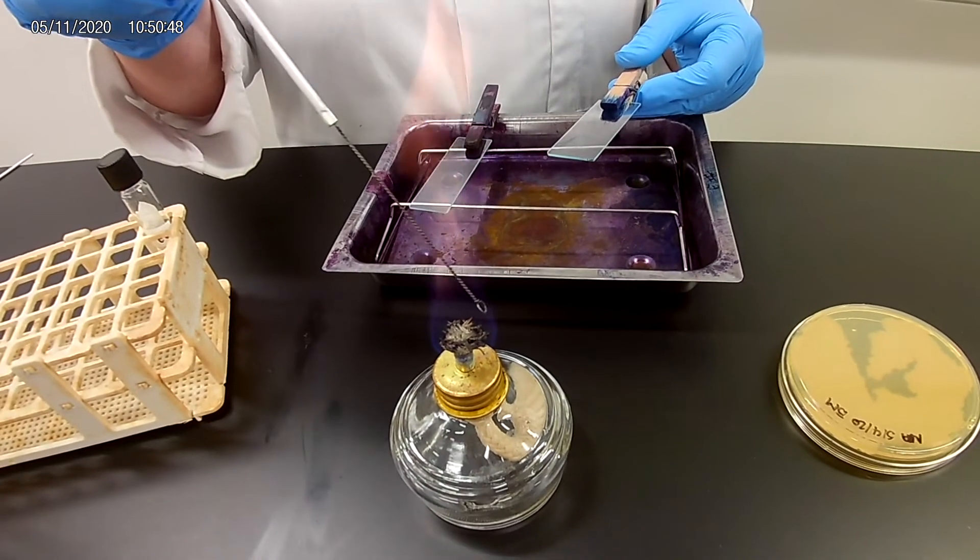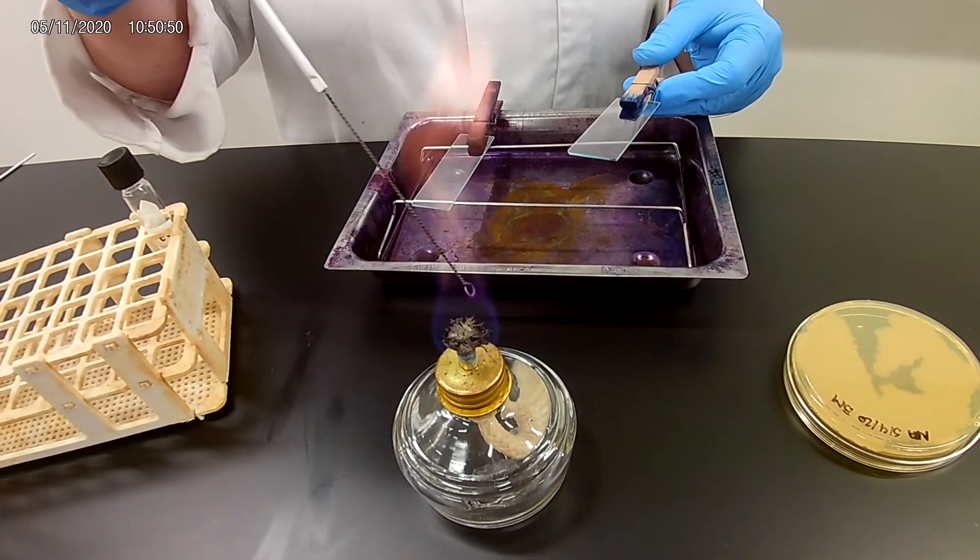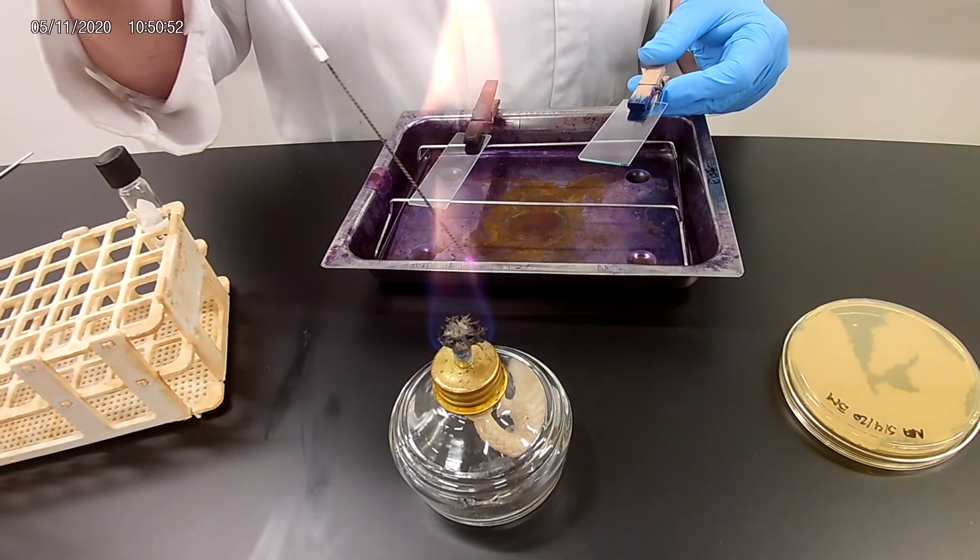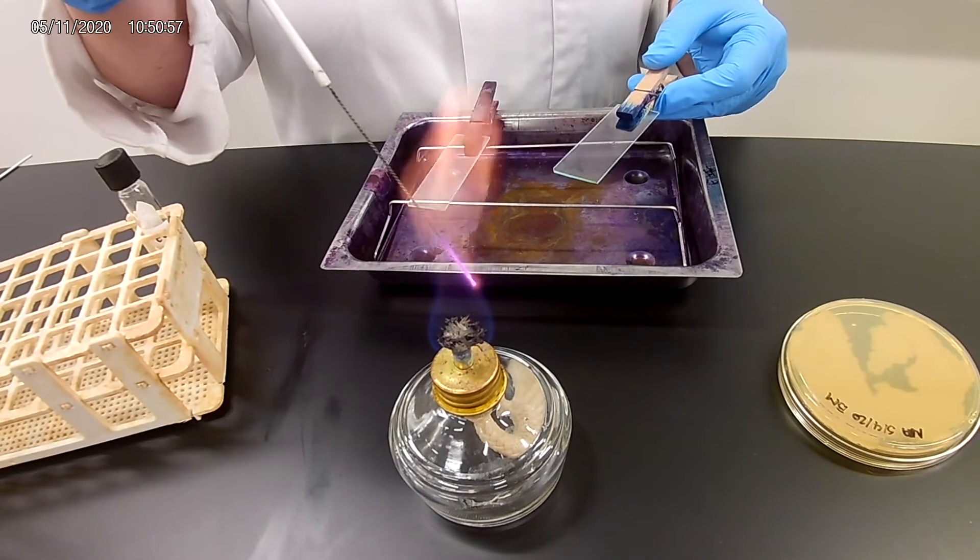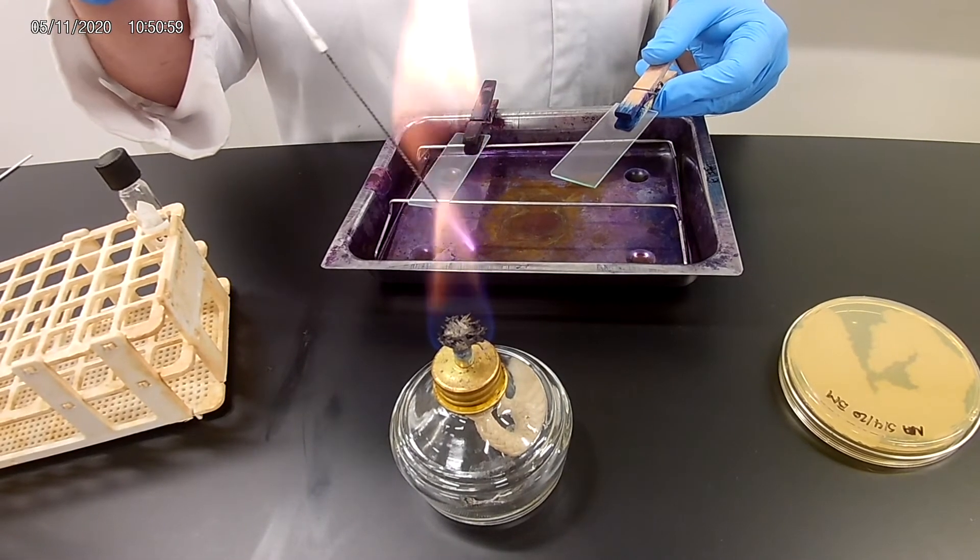You're going to flame your loop again because you need to kill whatever was on any of the remaining E. coli. So that's the smear, but now we have to do what we call heat fixing it.